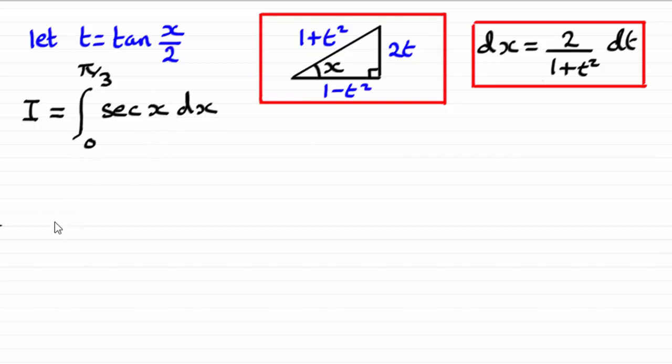First of all then, what we need to do is just make that substitution for sec x. Sec x, remember, is 1 over cosine x. Cosine x would compare the adjacent side with the hypotenuse. So we'd get 1 minus t squared over 1 plus t squared for cosine x. We just need to reciprocate that.